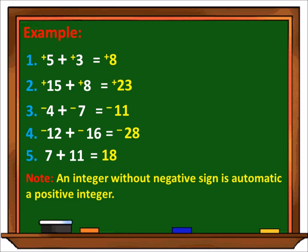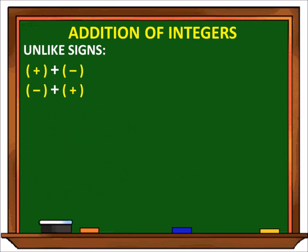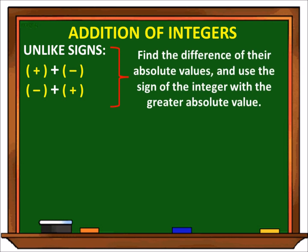How about addition of integers but this time with unlike signs? Halimbawa, positive plus negative or negative plus positive. The rule is: find the difference of their absolute values and use the sign of the integer with the greater absolute value. Ibig sabihin, kukopihin natin yung sign ng mas malaking absolute value na integer at isusubtract natin yung dalawang absolute values.